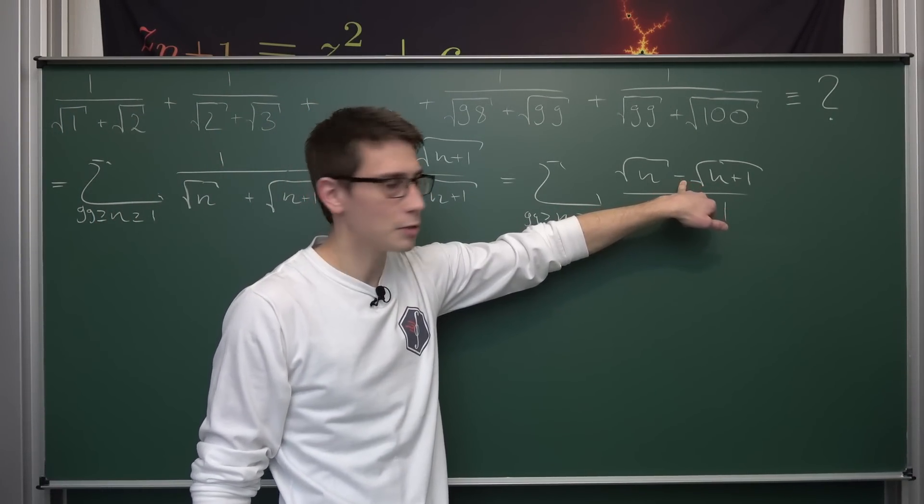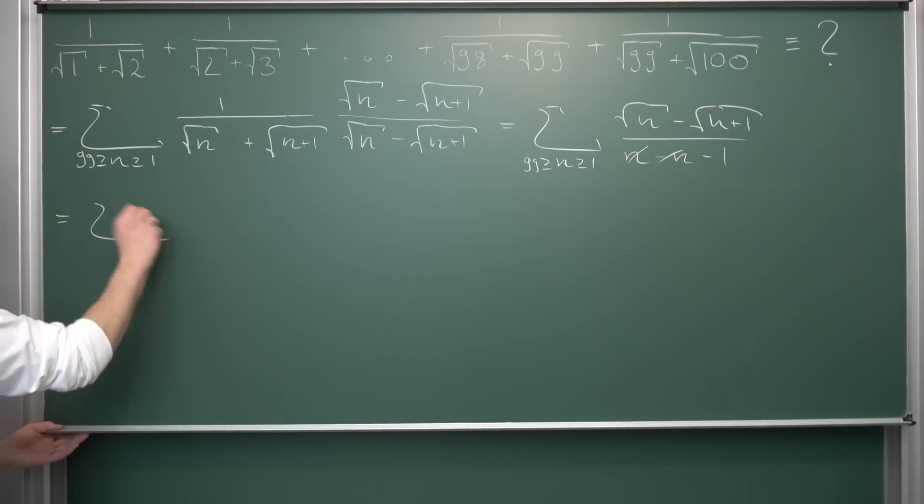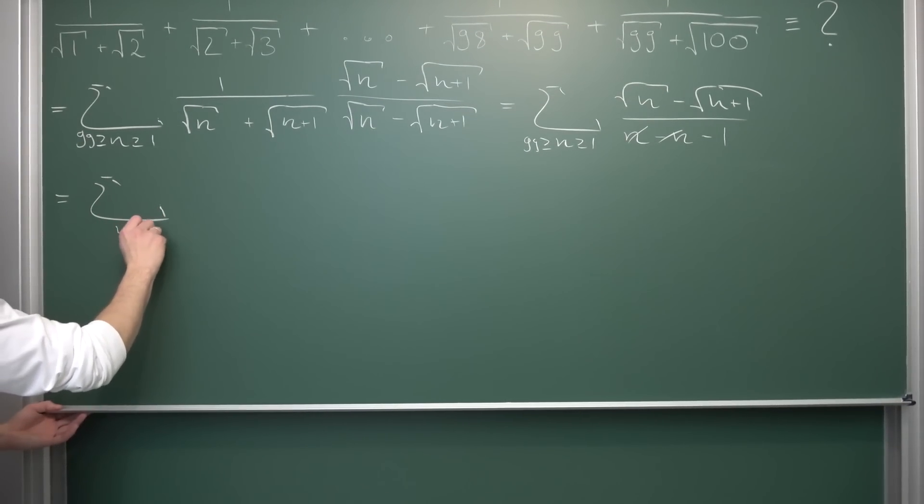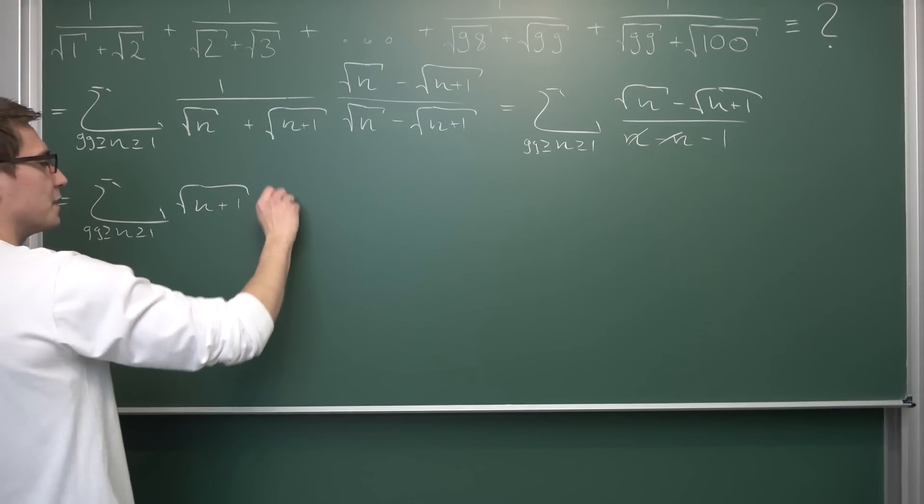Then we can distribute the negative sign into the numerator because why the hell would we have a separate negative sign here, turning this into a finite summation where our n is bounded between 1 and 99 yet again, and now we are going to get the square root of n plus 1 minus the square root of n.